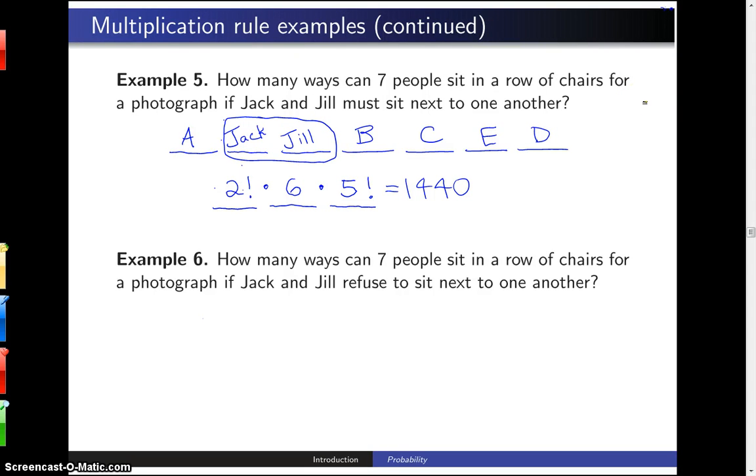The sixth example of using the multiplication rule is how many ways can seven people sit in a row of chairs for a photograph if Jack and Jill refuse to sit next to one another. I guess in this example they're enemies. So, we are going to make use of the previous example here to solve this problem.